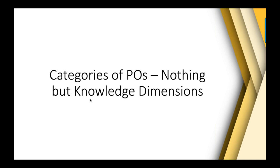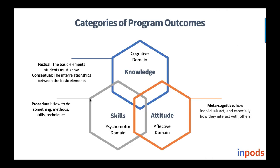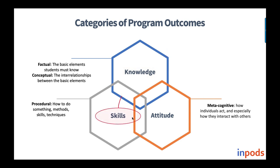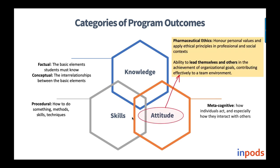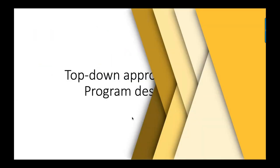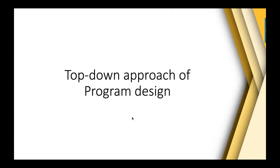We discussed the categories of program outcomes — knowledge, skill, and behavior or attitude — which we have been discussing from the beginning. We now know the association of these categories with knowledge dimensions: the knowledge category is associated with factual and conceptual knowledge, the skill category with procedural knowledge, and attitude with metacognitive knowledge. And this is where we stopped yesterday.